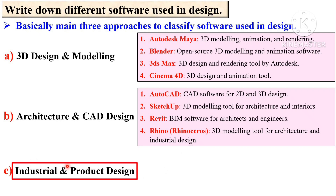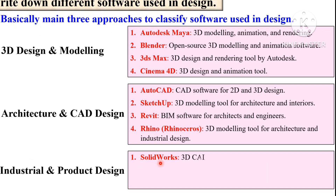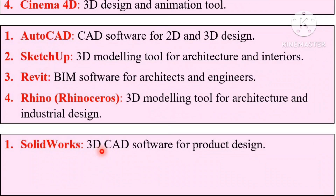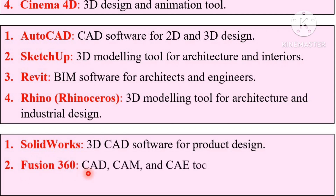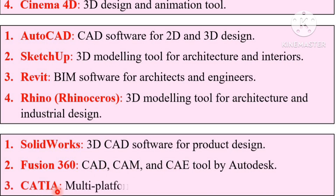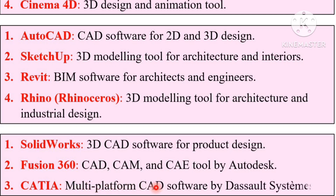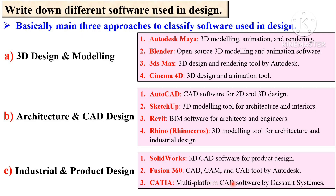The third category is industrial and product design. First is SolidWorks, used for 3D CAD software for product design. Second is Fusion 360, which includes CAD, CAM, and CAE tools, developed by Autodesk. Third is CATIA, a multi-platform CAD software by Dassault Systèmes.